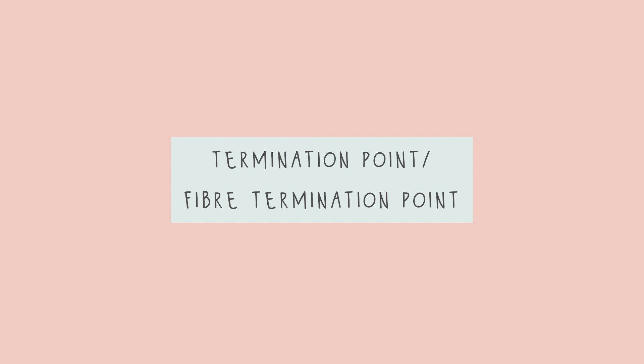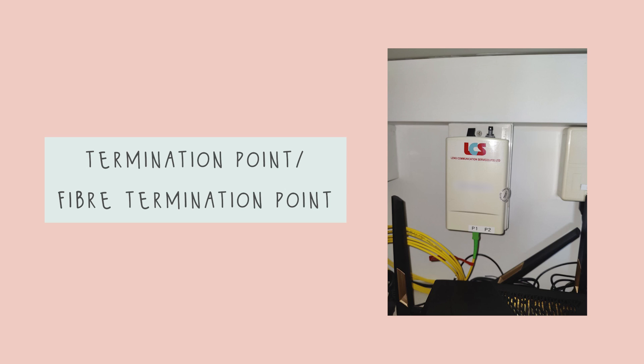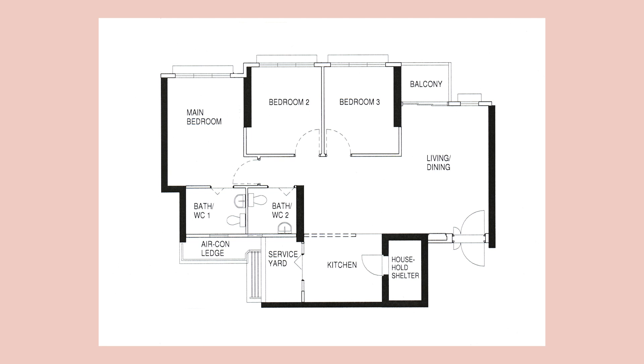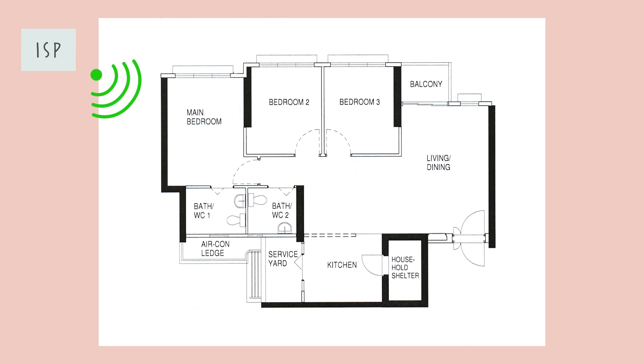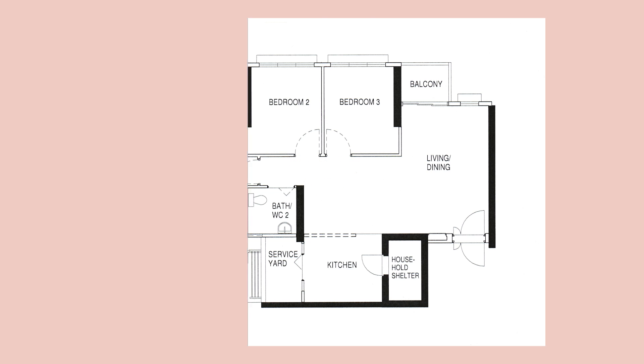First up is the termination point, also known as the fiber termination point. It's built in by HDB and it looks something like this. Basically this is how your house gets connected to the whole fiber network. To put it in simple layman terms, this is where the internet comes from — from the ISP to your house.